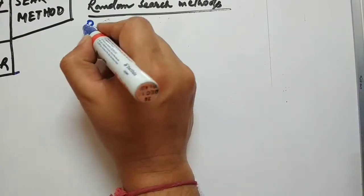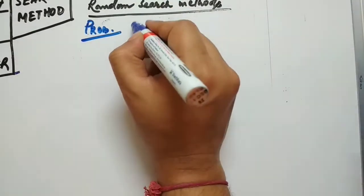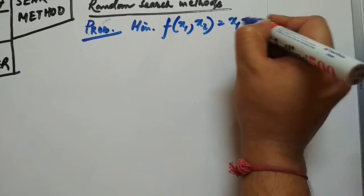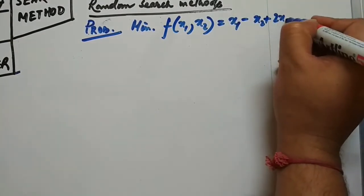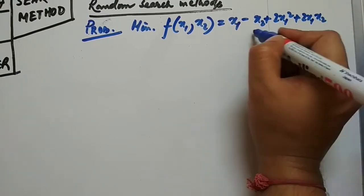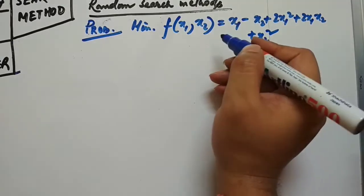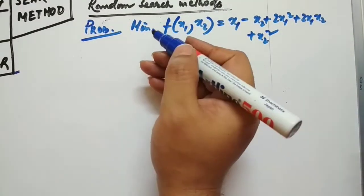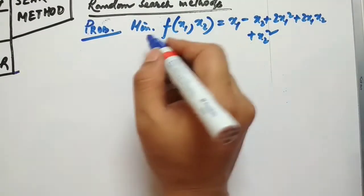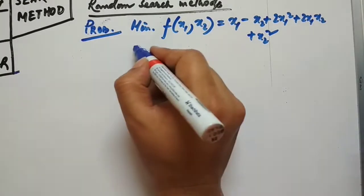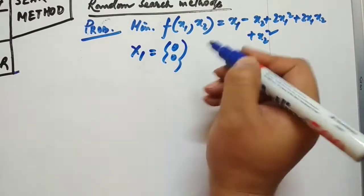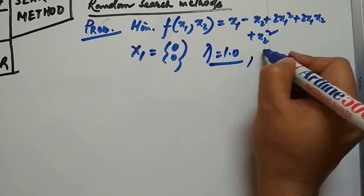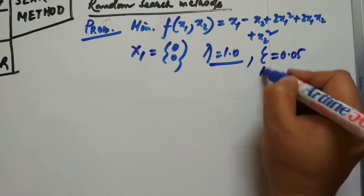Let us take a problem: minimize f(x1, x2) = x1 - x2 + 2x1² + 2x1x2 + x2², using the random jump method, from a start point x1 = x2 = 0, with a starting step length lambda = 1.0, epsilon = 0.05, and n = 100.